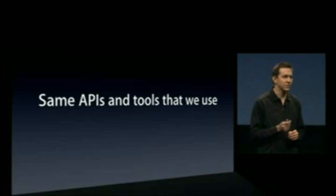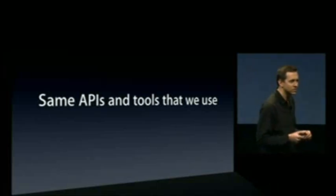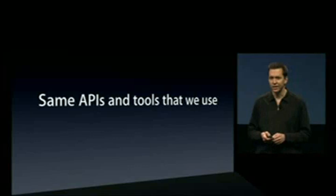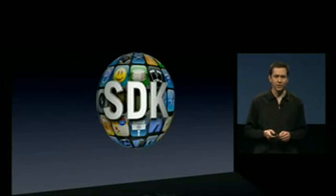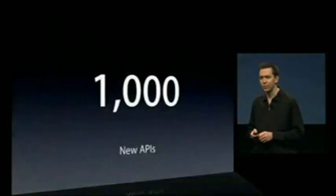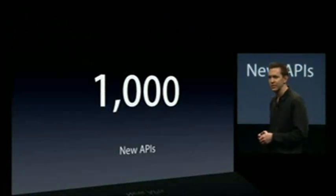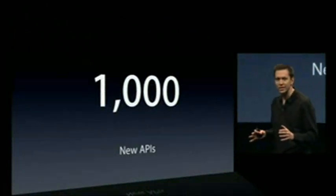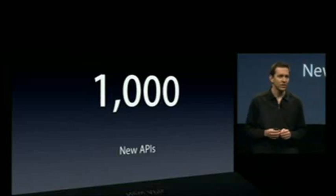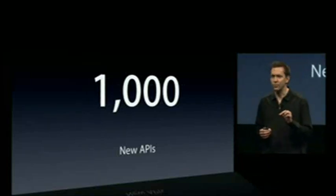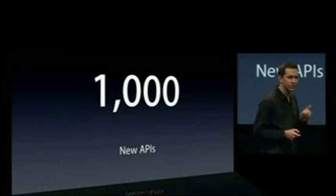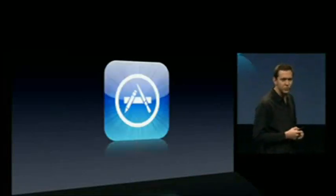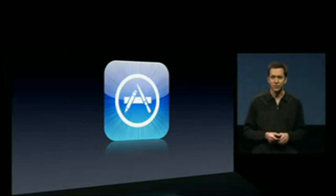So we've spent the last year working hard to make this SDK even better. With iPhone 3.0 comes the next generation of this native SDK, and with it come more than a thousand new APIs. This is a lot of functionality to make these apps even easier to develop and allow developers to add even more functionality. Let me talk you through just a little bit of this new SDK, starting with enhancements we're making to the App Store.